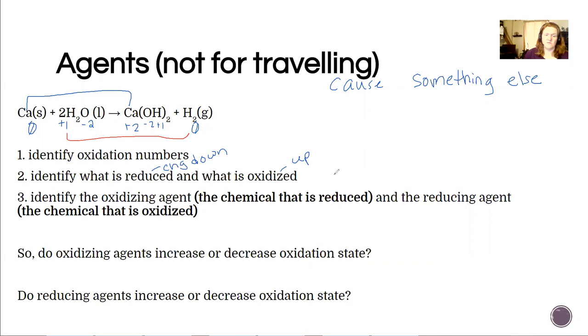So hydrogen goes from plus one to zero, that's down. So hydrogen went down in charge, that means it's reduced. While the calcium went from zero to plus two, so that's up. That means it was oxidized. Now ask yourself the question, which one loses electrons? Which one gains electrons? You should be able to answer that. The answer is this one loses and the hydrogen gains.